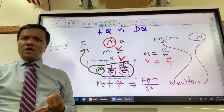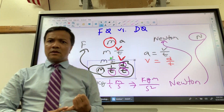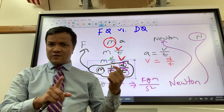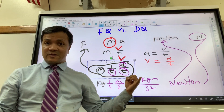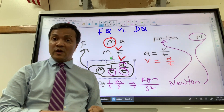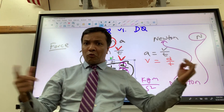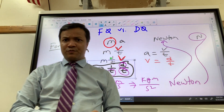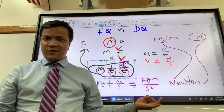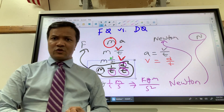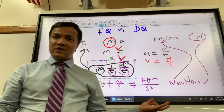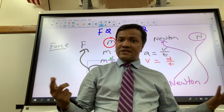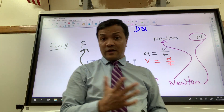Now you know that the newton is the SI unit for all forces. There are four fundamental forces in the universe: for gravity, the SI unit is newton; for electromagnetic force, it's newton; for strong nuclear force, it's newton; and for weak force, it's also newton.